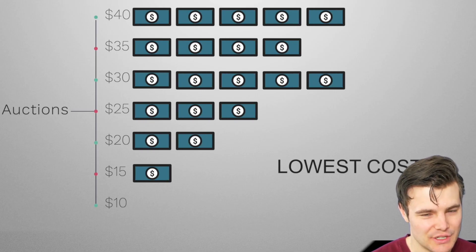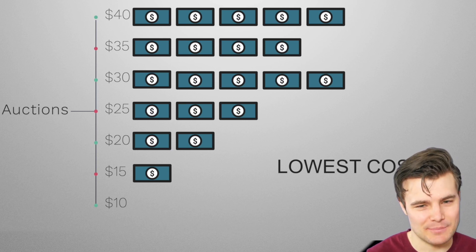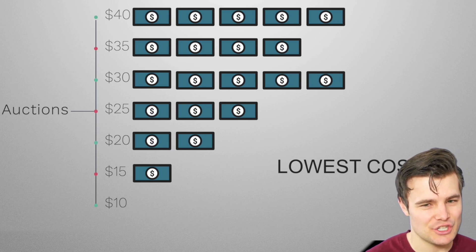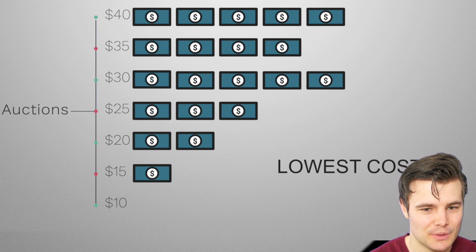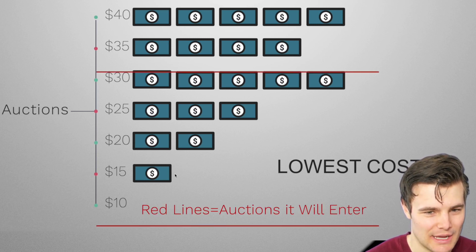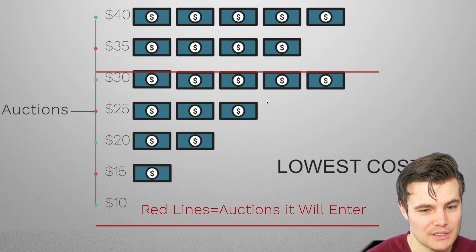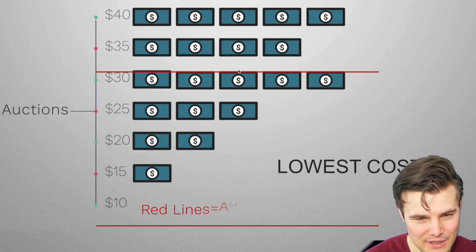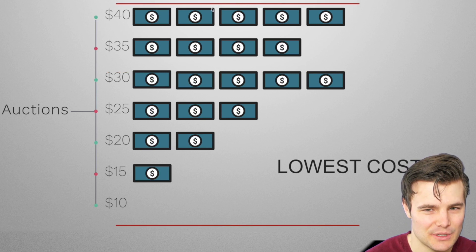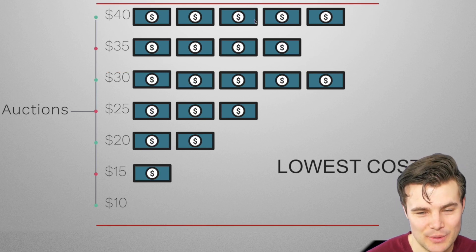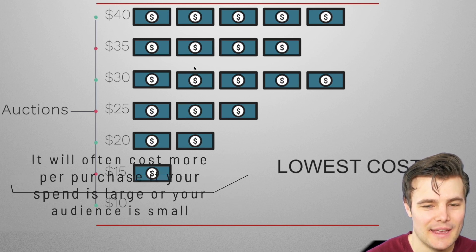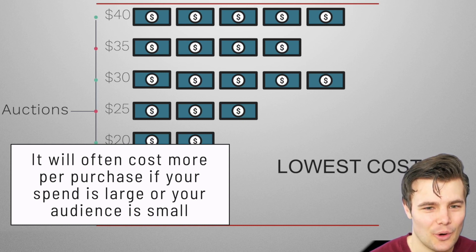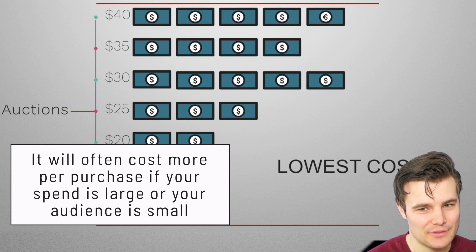The different bid strategies: the default and simplest is lowest cost, and that's what we're going to use here. There are constant auctions going on. People who are less expensive to get in front of are pretty likely to make a purchase without spending a lot. If your budget is $150 a day, it works through cheaper auctions until it hits $150. If your budget is $1,000 a day, it has to show to every single person in the audience, which is often why it costs a little more.